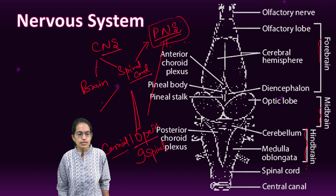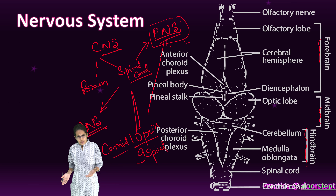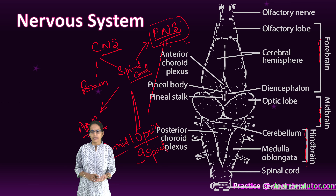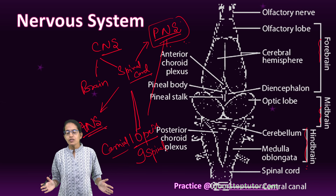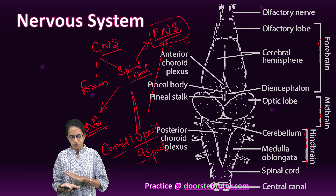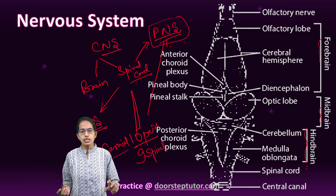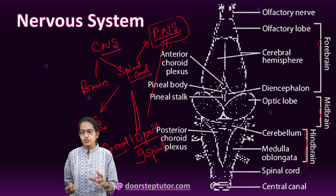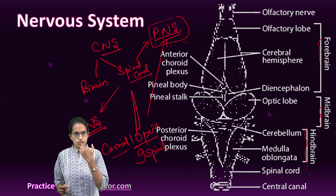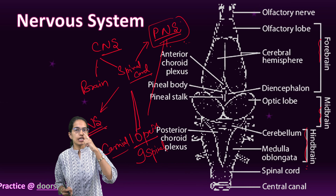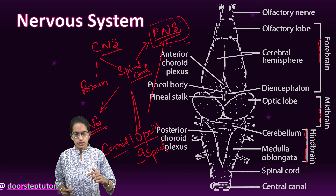Within the peripheral nervous system and the spinal cord, we have the peripheral nervous system as well as the autonomic nervous system. Under the autonomic nervous system we have the sympathetic as well as the parasympathetic nervous system. There are 5 sense organs.